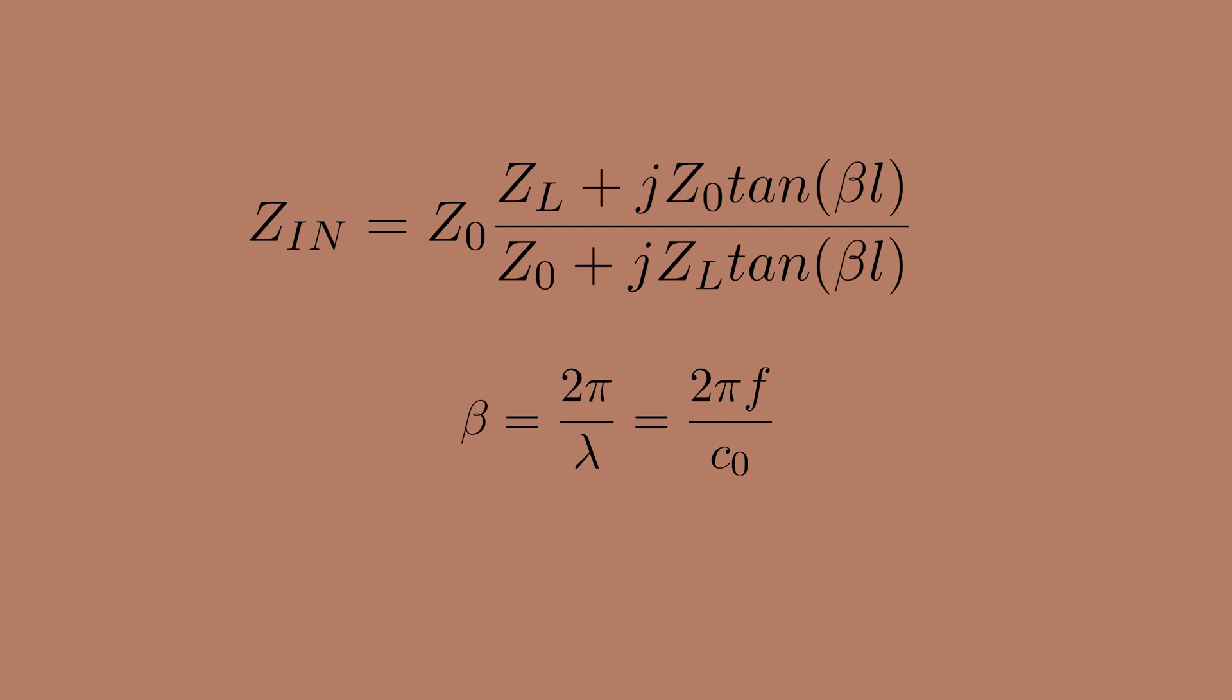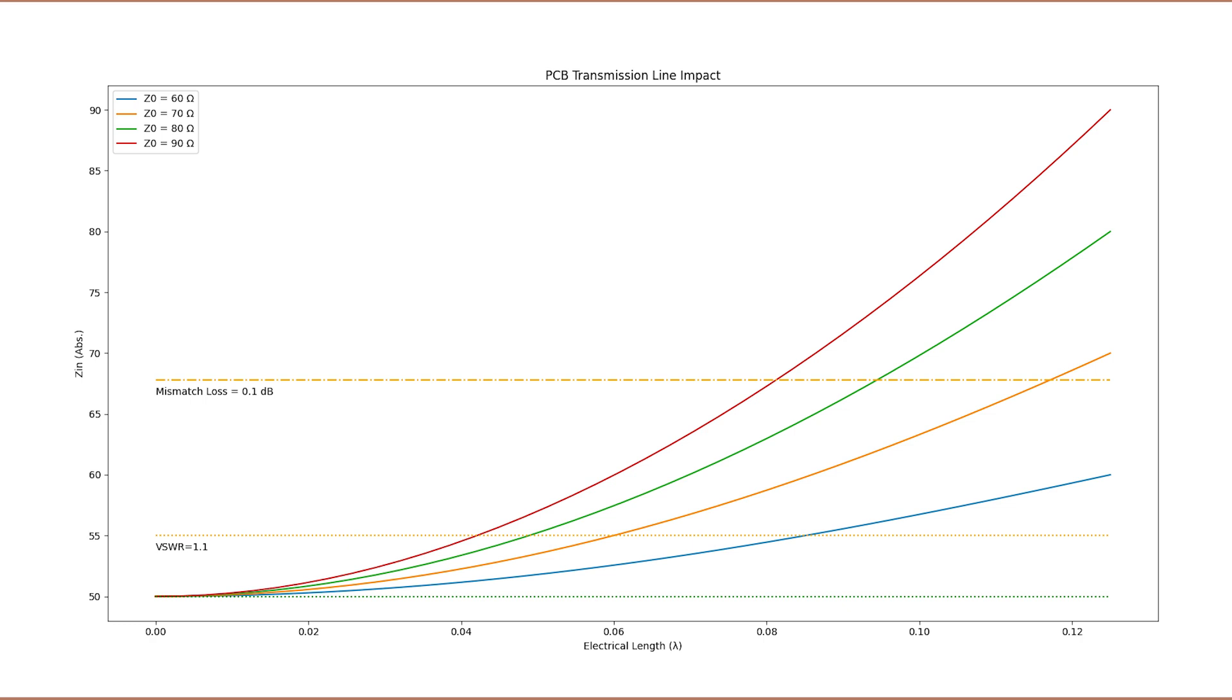This graph shows the resulting input impedance as a function of length for various traces with varying impedances between 60 and 90 ohms. This graph assumes the load impedance to be 50 ohms.